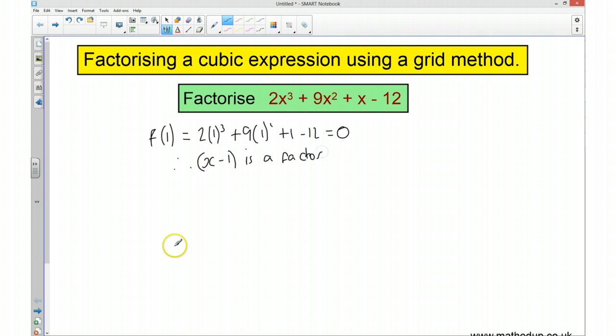Okay, now I know one of the factors. There must be something that exists, so if when I times it by x take away 1, I get this expression here. So I'm going to multiply it by something here to give me 2x cubed plus 9x squared plus x take away 12.